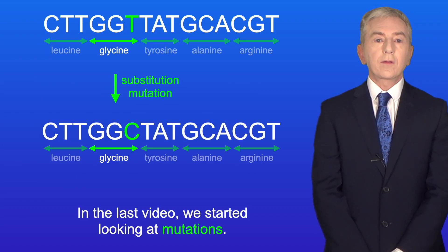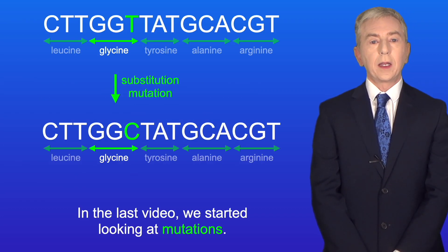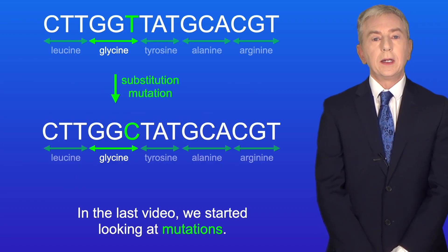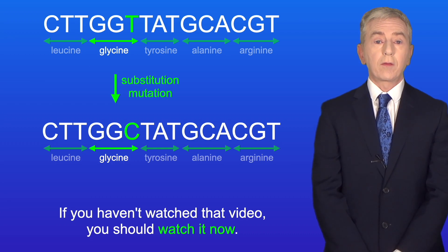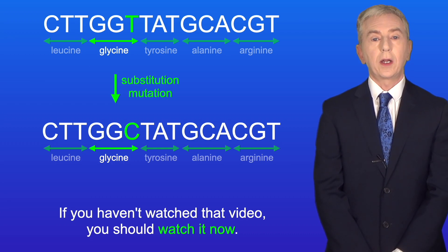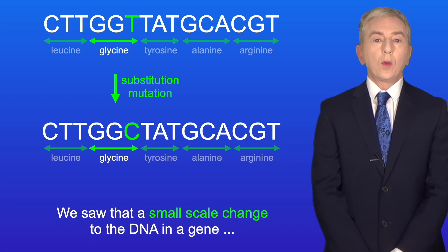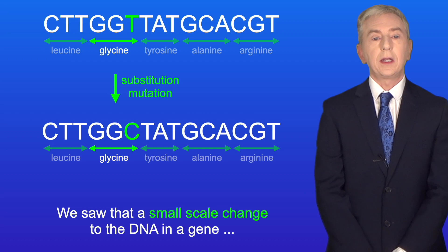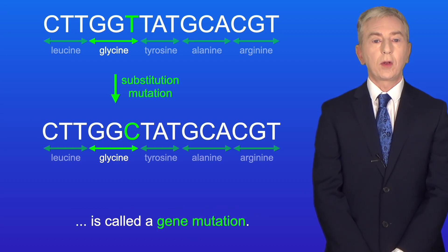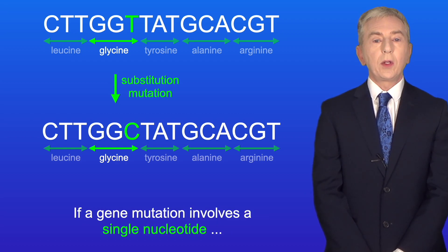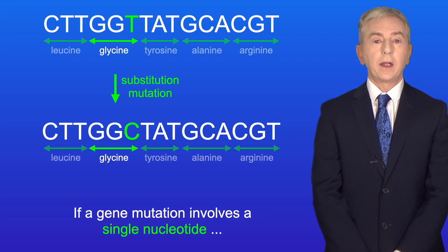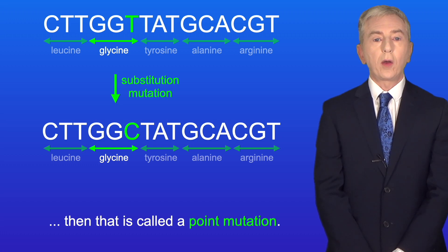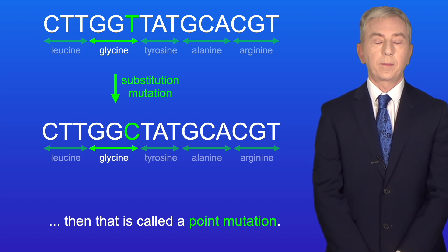In the last video, we started looking at mutations and if you haven't watched that video, you should watch it now. We saw that a small scale change to the DNA in a gene is called a gene mutation. And if a gene mutation involves a single nucleotide, then that's called a point mutation.